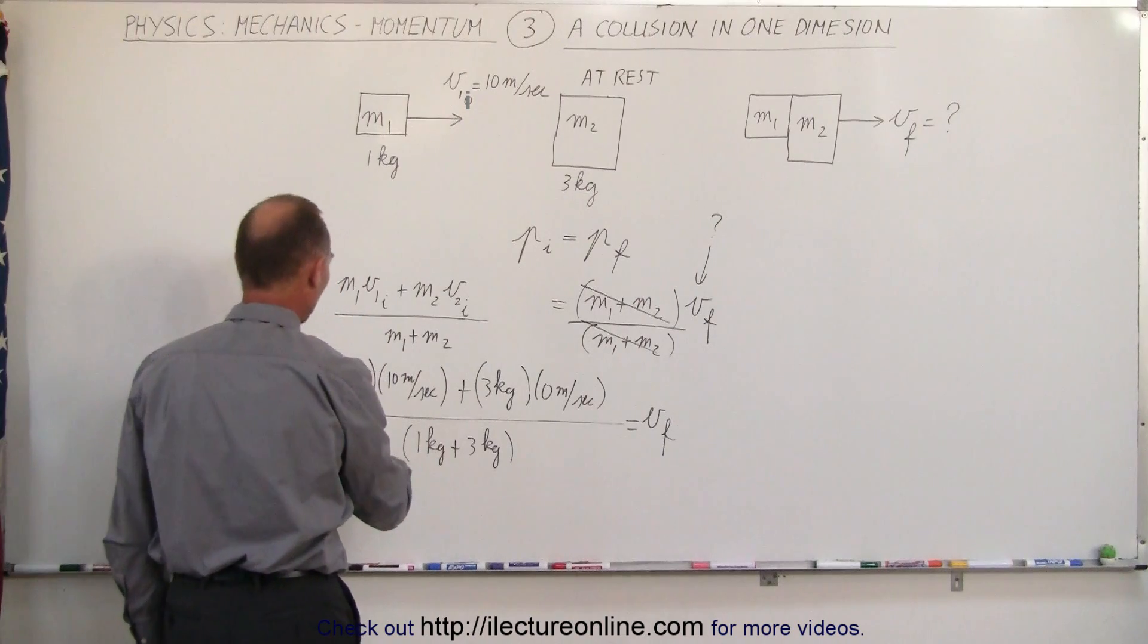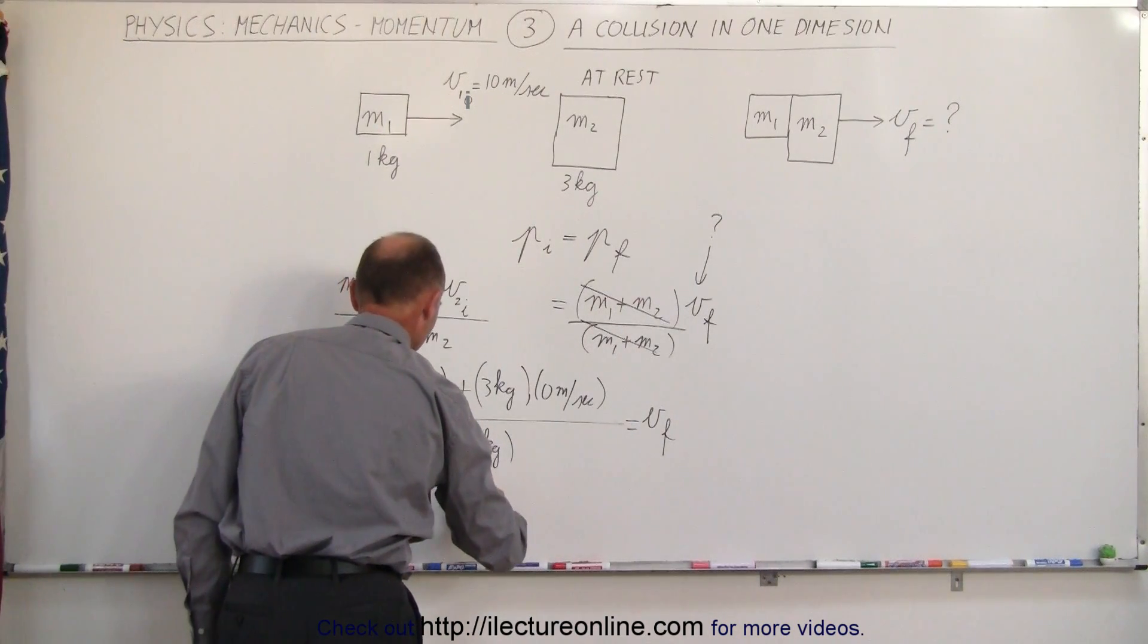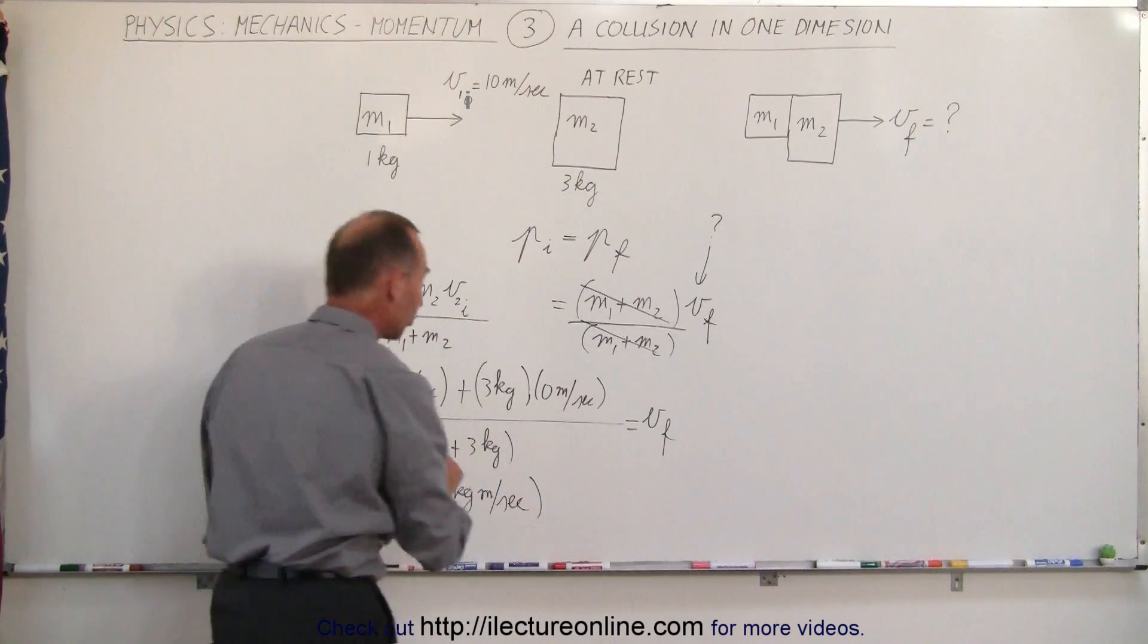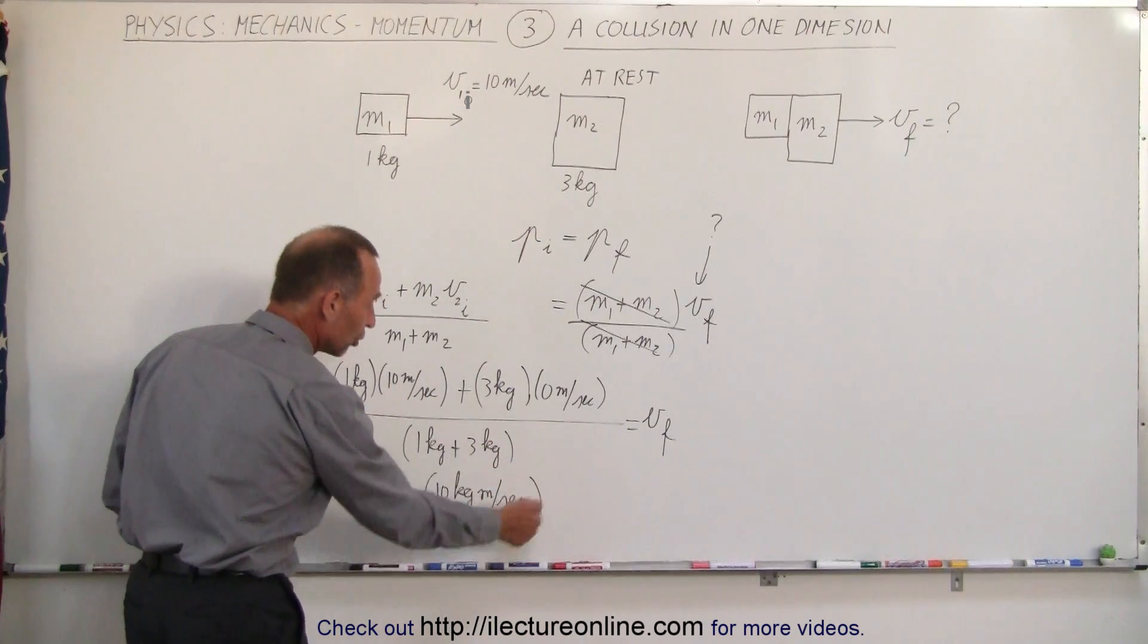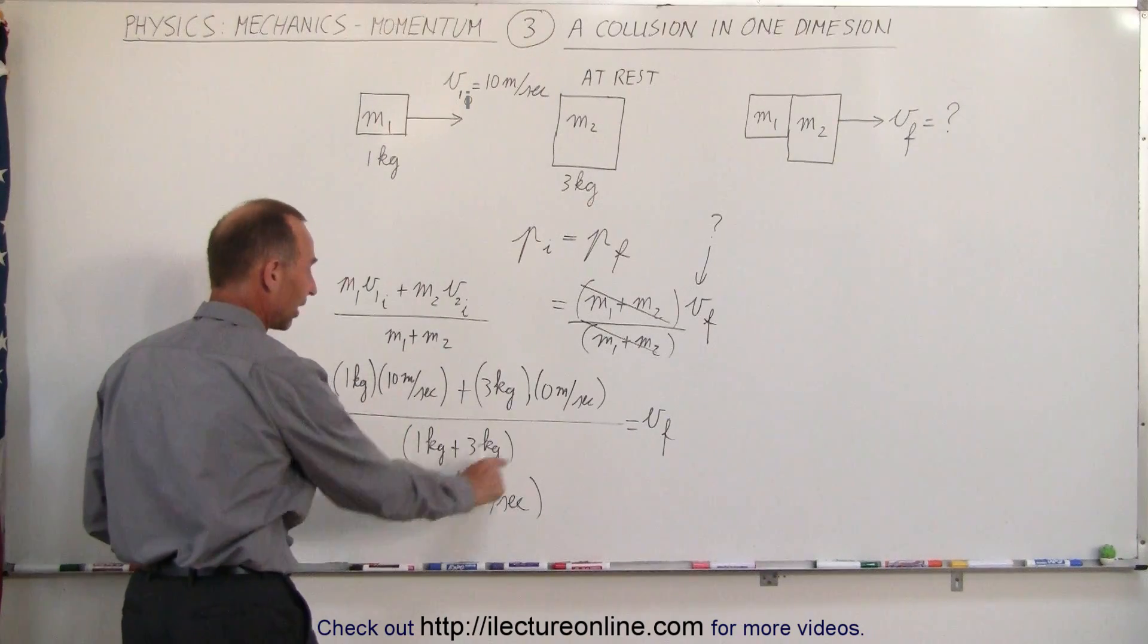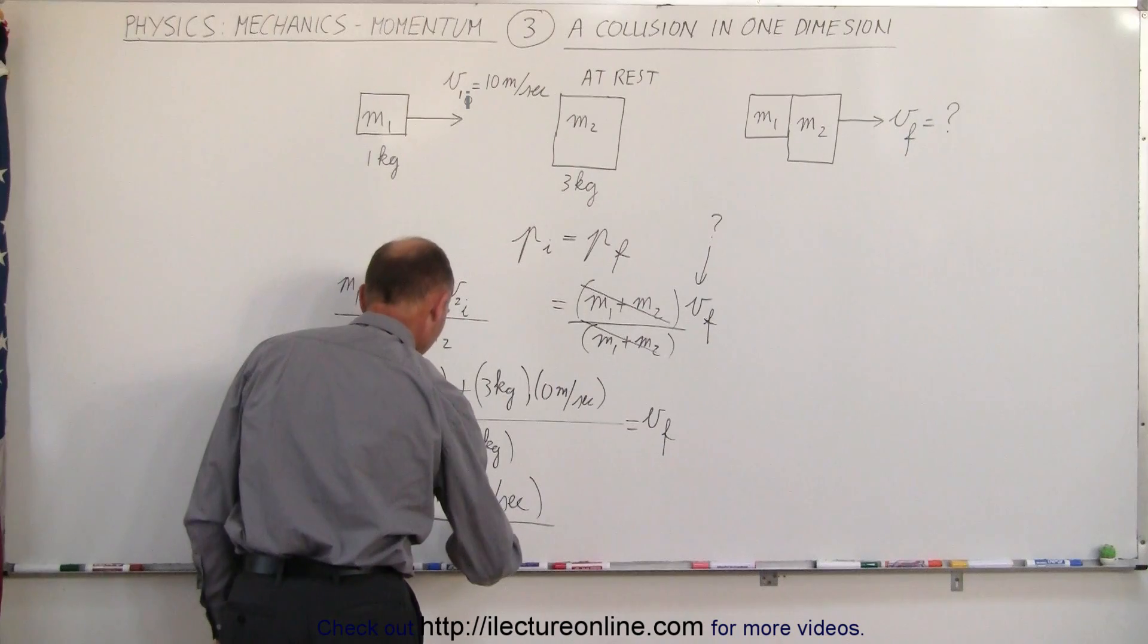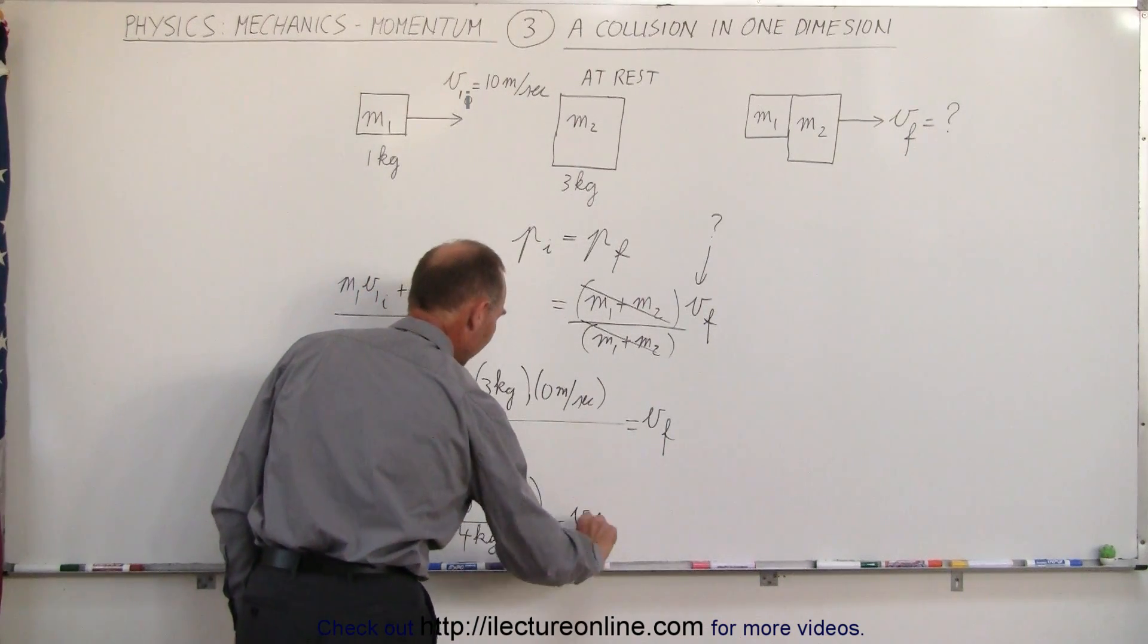Adding this together, I have 1 times 10, which means I have 10 kilogram meters per second, and notice those are the units of momentum. Mass times velocity, so kilograms meters per second is the units of momentum. So 10 kilograms meters per second plus 0, which is 10 kilogram meters per second divided by 4 kilograms equals the final velocity.